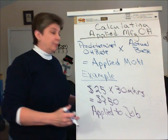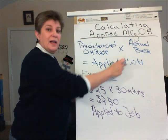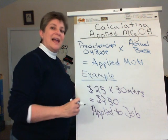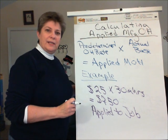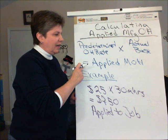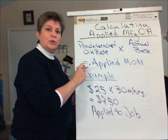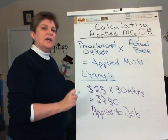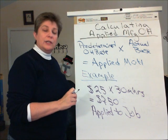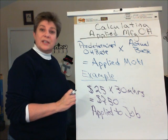So pretty simple. Rate times the actual activity consumed by individual jobs will equal the amount of overhead applied to the job cost sheet for that particular job and in turn to work in process inventory.